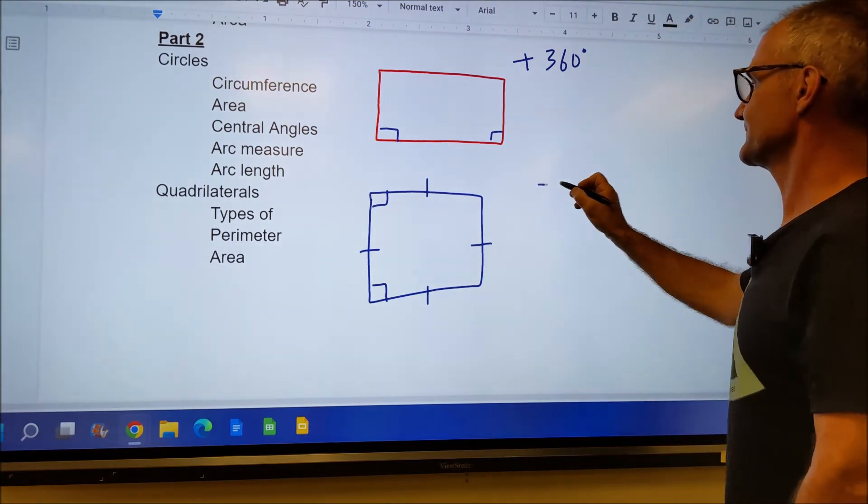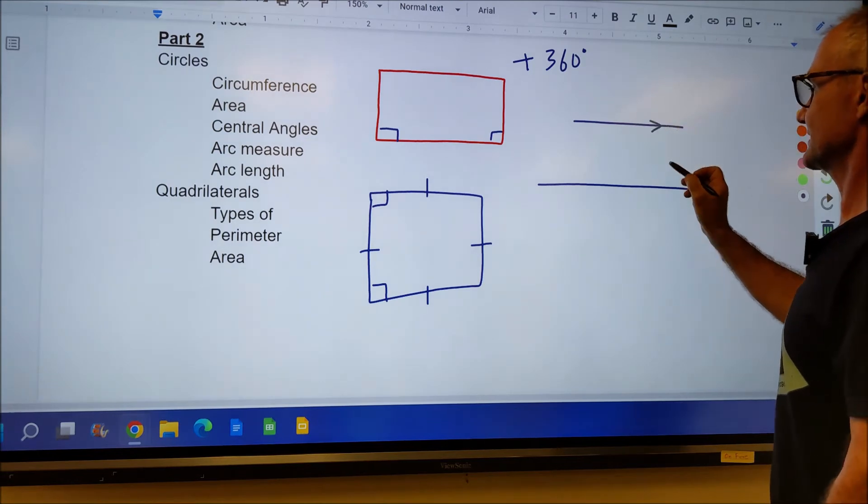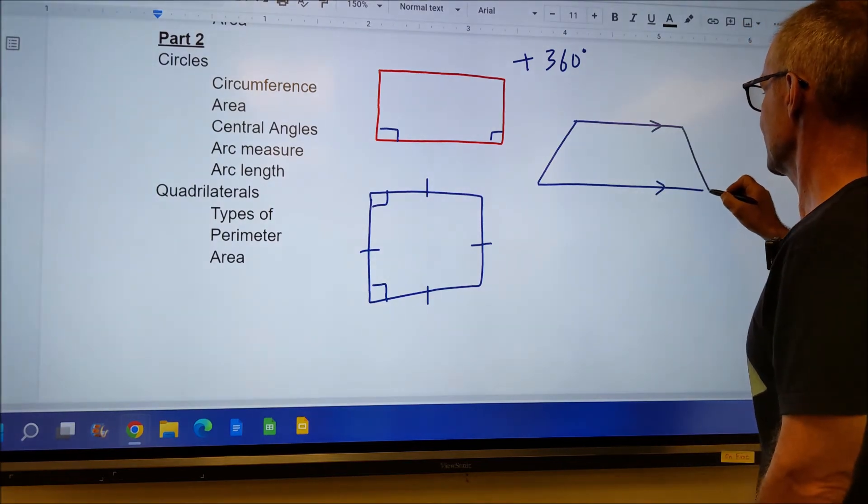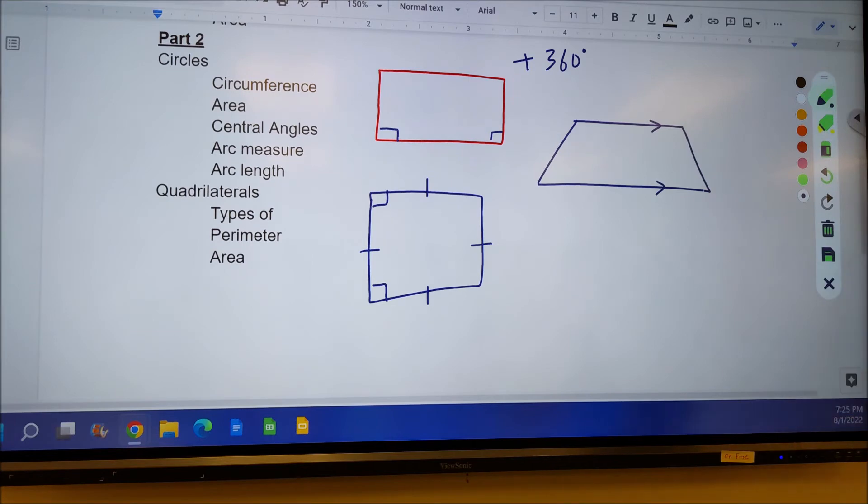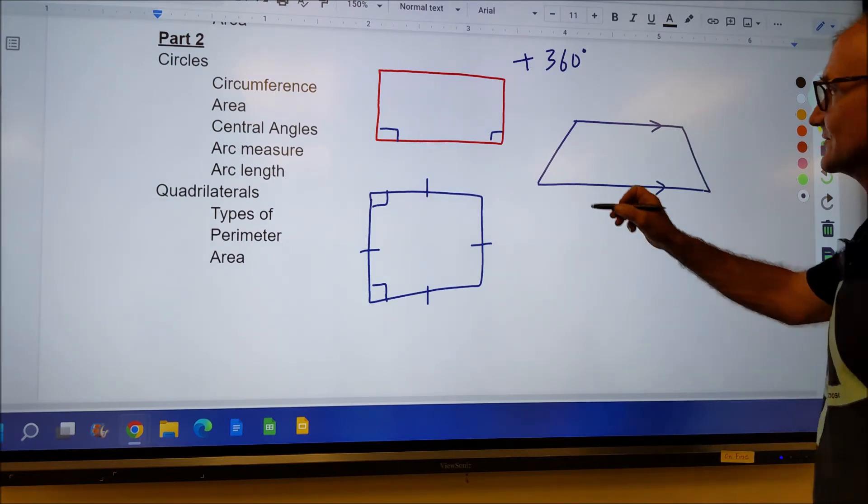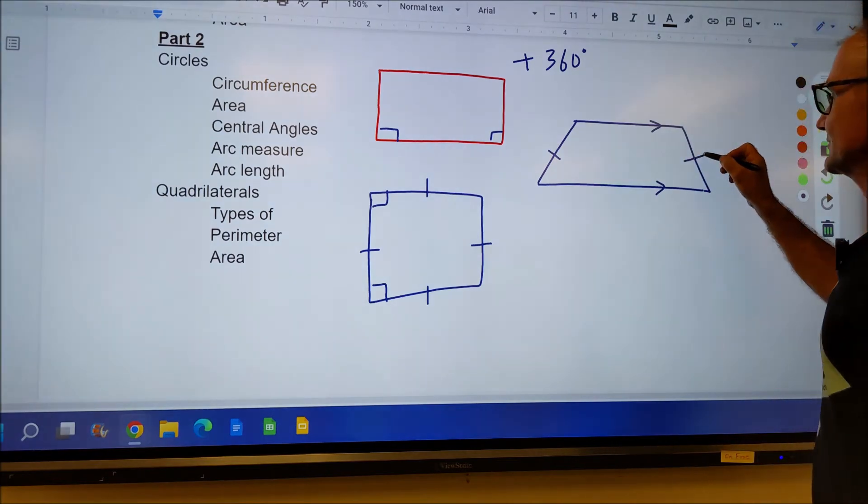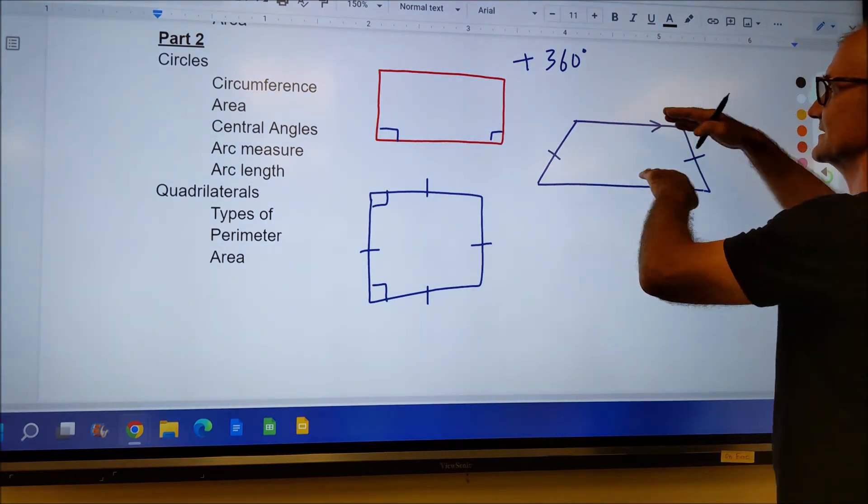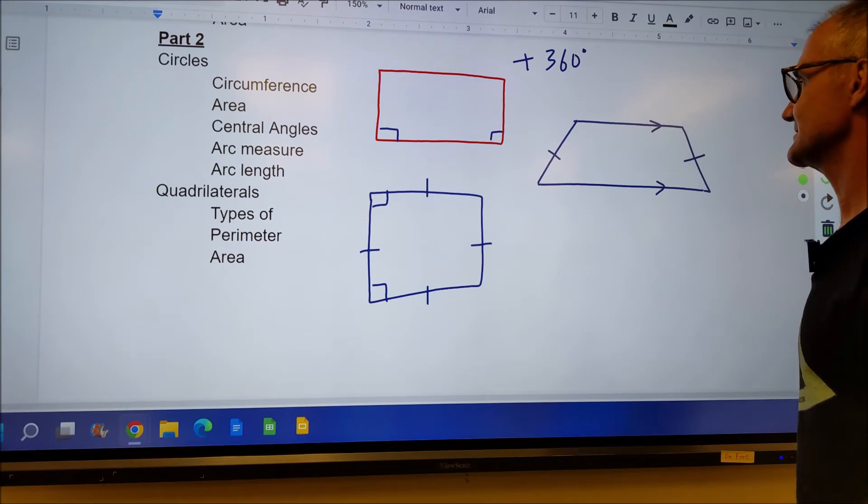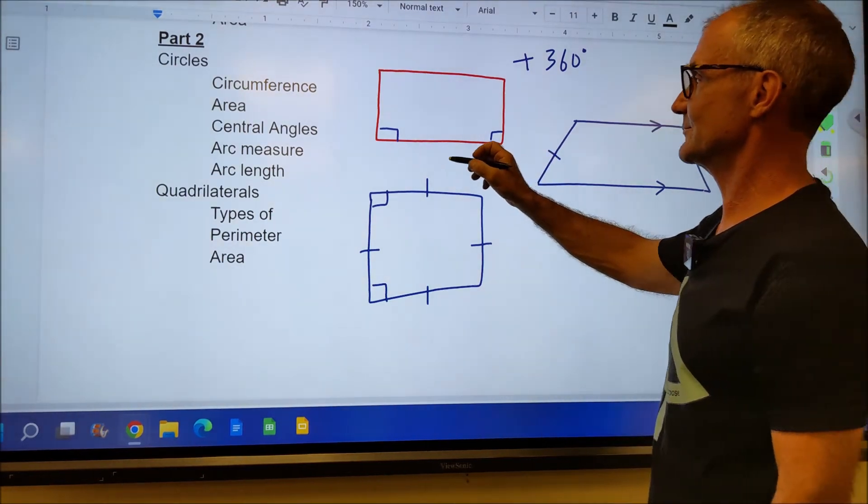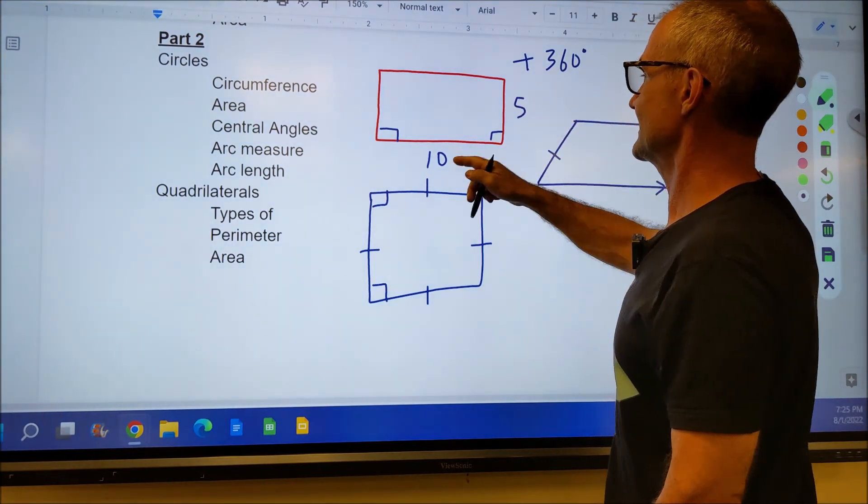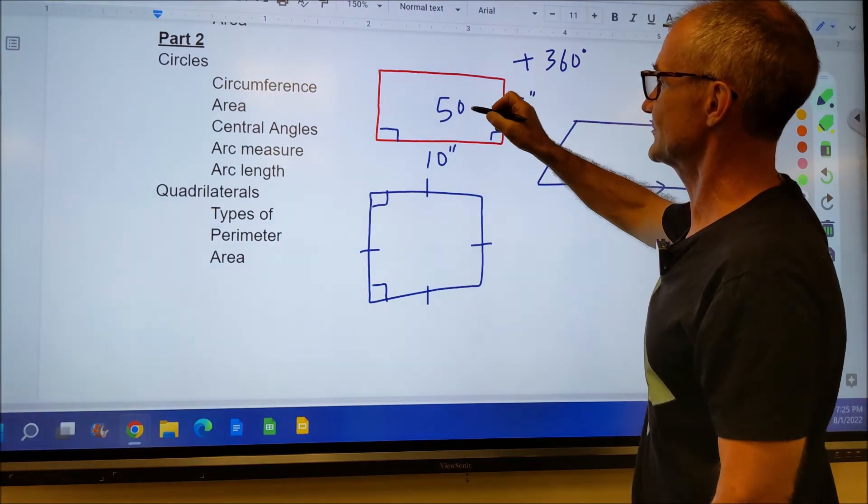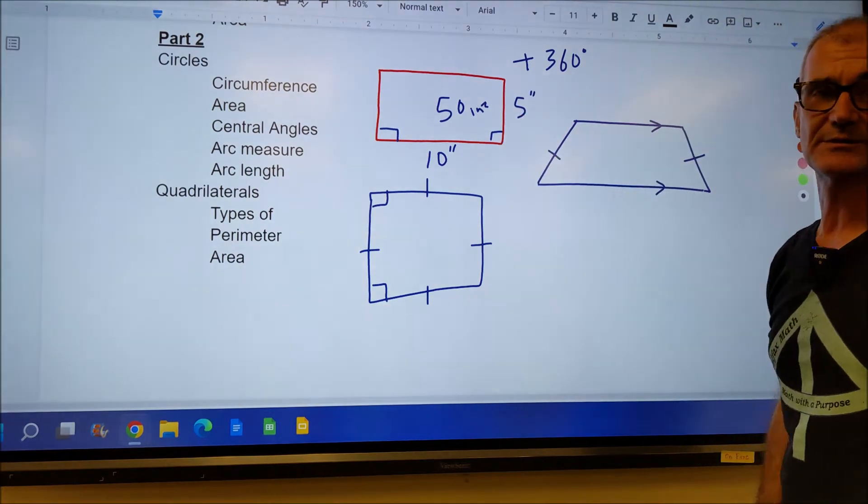We've got a rectangle, a square. If I have a set of parallel sides, and a lot of times I put arrows on there to say parallel, and it's a four-sided figure like that, that's called a trapezoid. Again, all four angles are going to add up to 360. If I know this side and this side are congruent, that's going to make it an isosceles trapezoid. I can find the area of any rectangle by doing base times height. So if this is 10 times 5, the area of this one would be 50 square inches.